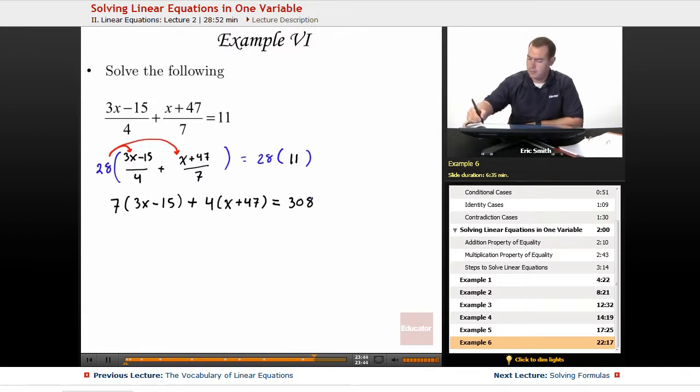Okay, so some fairly big numbers. Let's continue distributing. Let's take this 3, multiply it by the 7, and we'll also take the 15, multiply it by the 7. Do the same thing with the 4 on this side.